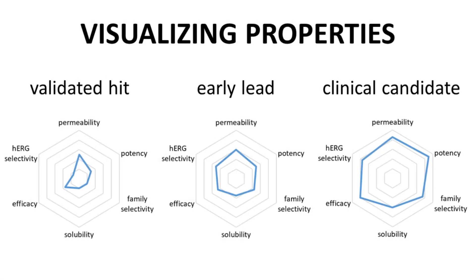How can we describe this improvement in properties — potency, efficacy, PK, and safety? The properties of compounds may be tracked on a radar chart. In these radar charts, permeability and solubility may serve as a proxy for PK properties. Safety may be captured through selectivity, such as on the hERG channel or within a target family.